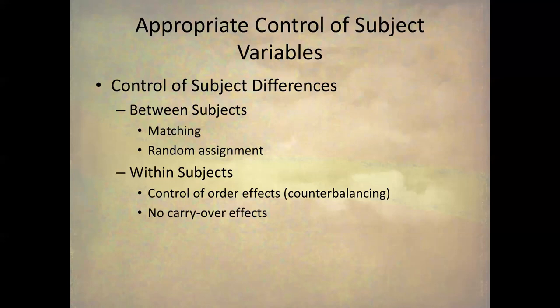A final internal validity topic is the control of subject variables — the differences between subjects such as gender, handedness, IQ, and race. We control subject variables two major ways. In between-subject designs, we use matching or random assignment. In within-subject designs, the design itself controls for subject differences, but we need to control for order effects using counterbalancing. We also have to worry about carryover effects, which can ruin a within-subject design — if you have carryover effects, you have to use a between-subjects design.